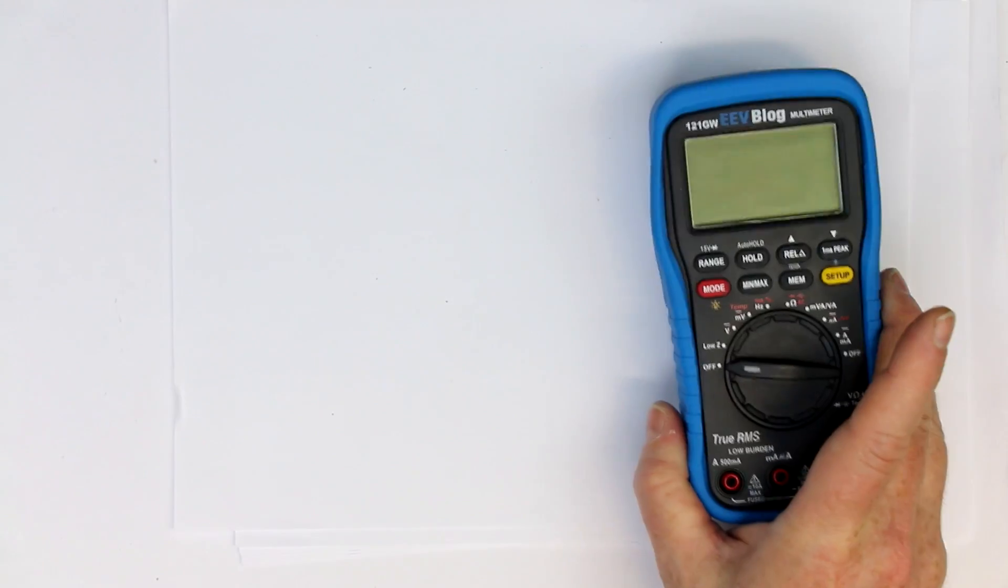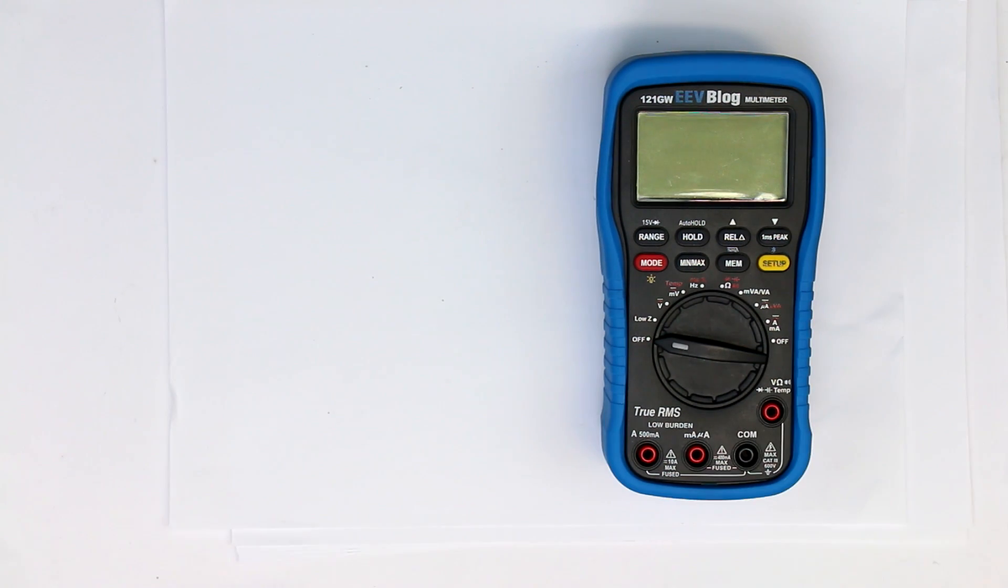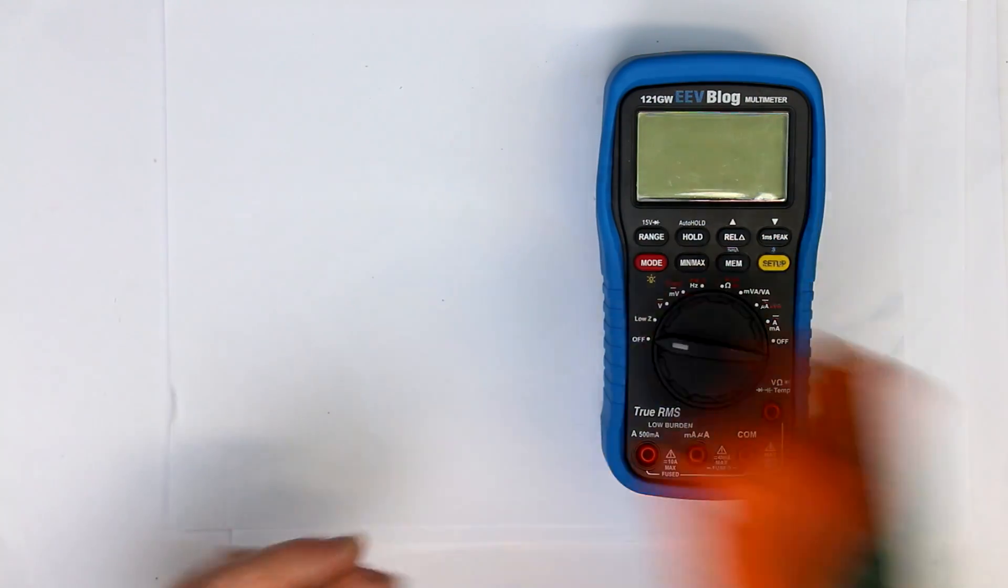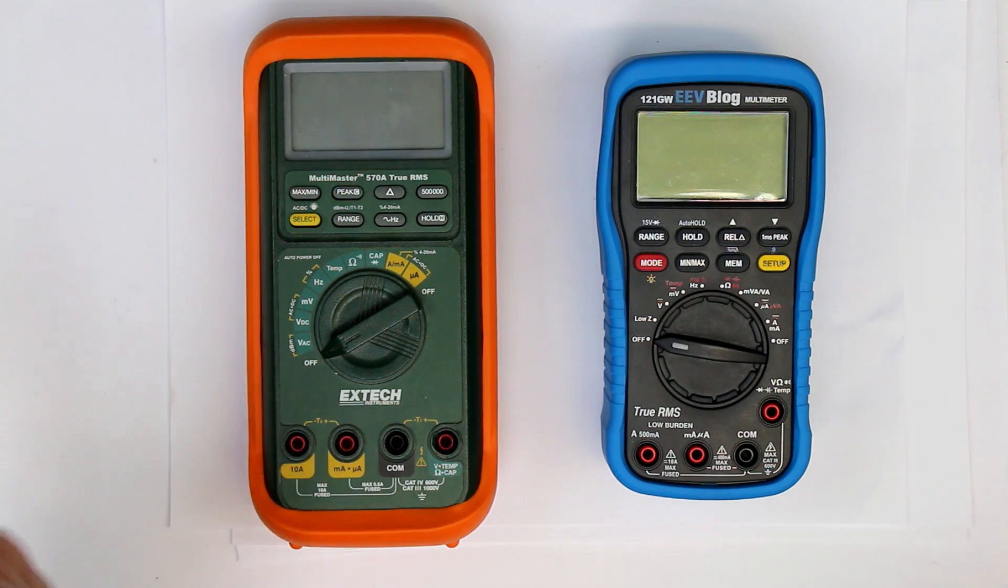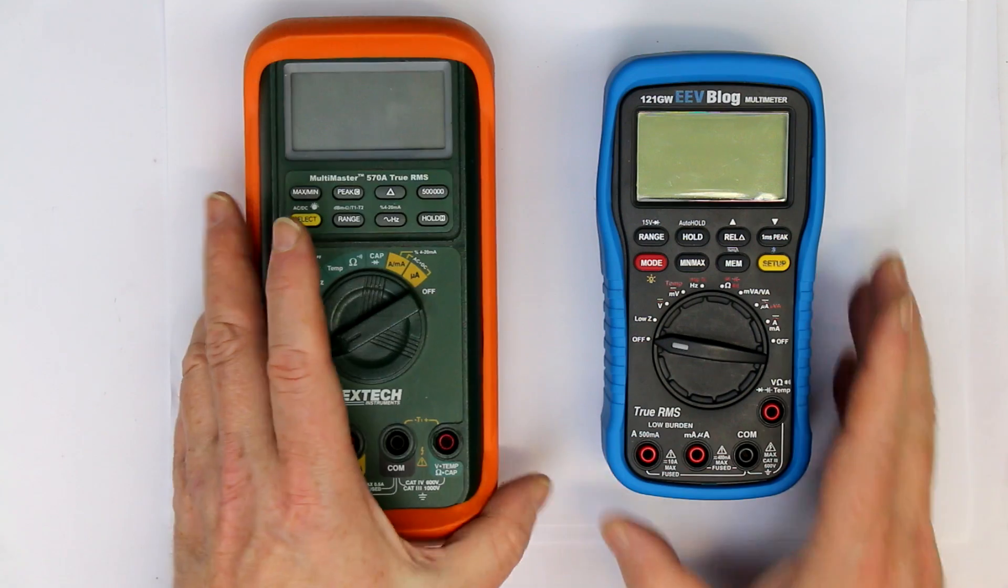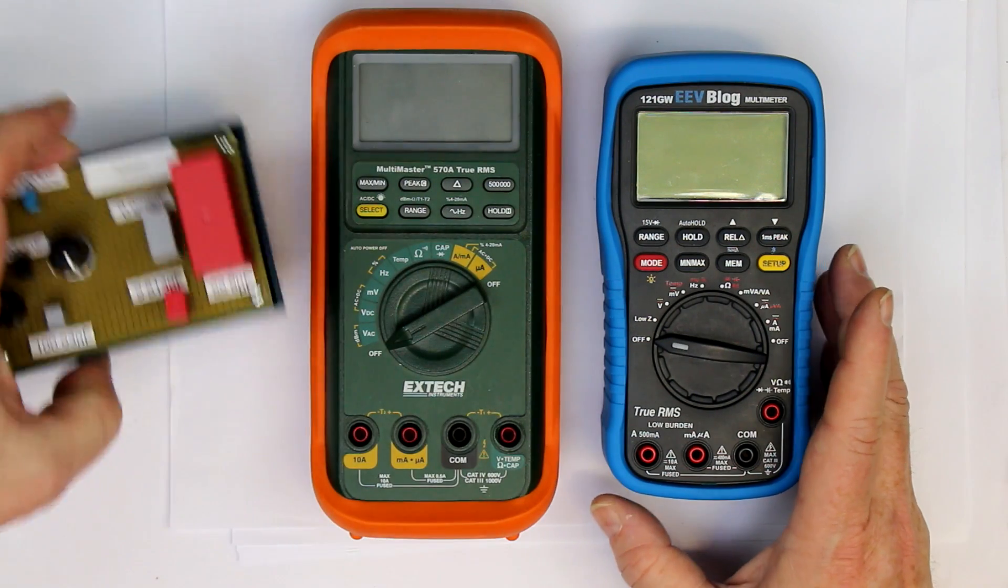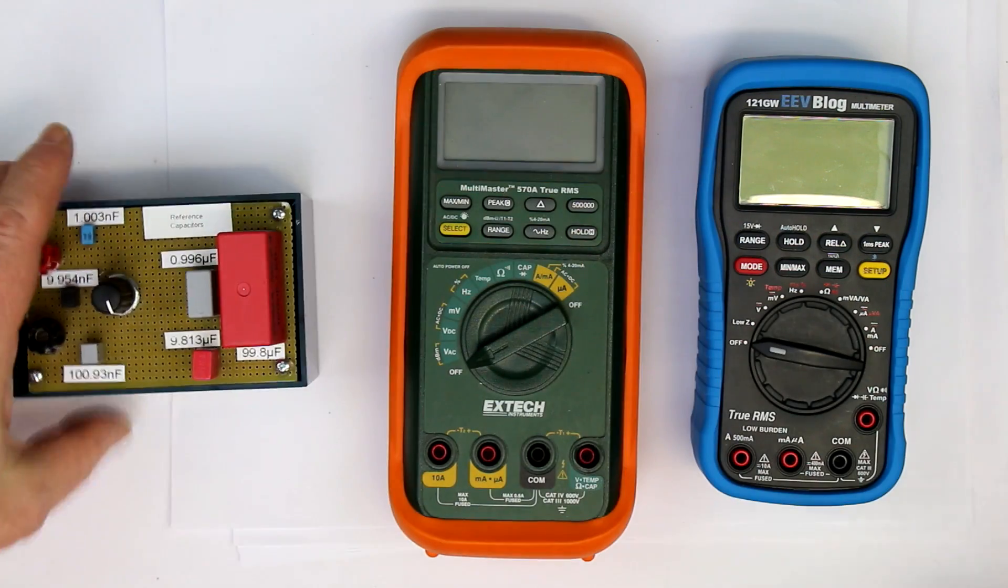For example, the EEVblog 121GW, I think it has 2.5%. And even the X-Tec, aka the rebranded Brymen, it has something around 1.5%. So let's see what our reference capacitors will show on the multimeters.